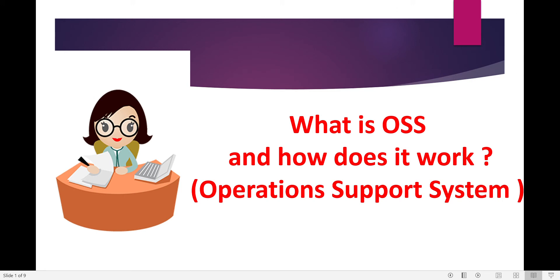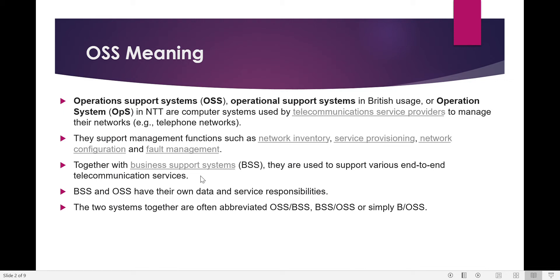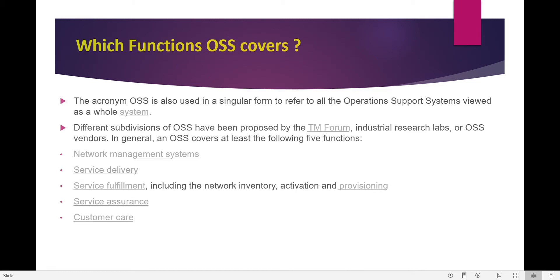Today we'll see what OSS is and how it works. OSS is known as the Operation Support System. Operation support systems are used in supporting management functions such as network inventory, service provisioning, network configuration, and fault management for networks. Together with BSS, which is the Business Support System, they are used to support various end-to-end technology or telecommunication services.